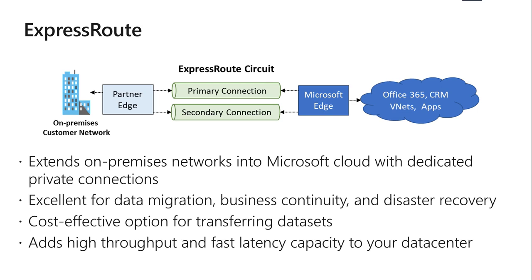So we have to do some definitions first for ExpressRoute. Azure ExpressRoute lets you extend your on-premises network into the Microsoft Azure cloud over a dedicated private connection, which is facilitated by a connectivity provider — for example, China Telecom, Verizon, or AT&T. With ExpressRoute, you can establish connections to Microsoft cloud services like Azure, Office 365, and CRM Online. So it's not necessarily just Azure.